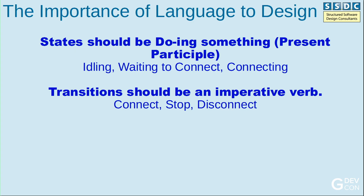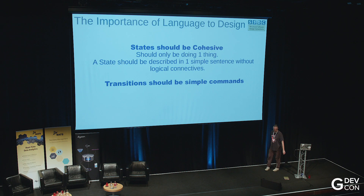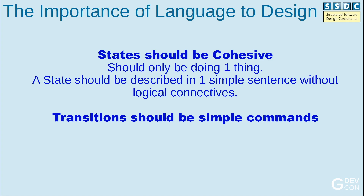Transitions should be imperatives - commands, essentially. 'Connect,' 'stop,' 'disconnect.' States should be cohesive - the same as modules should be cohesive, states should be doing one thing. It should be described in one simple sentence without logical connectives. If you've got an 'or' or an 'and' in your sentence describing the state, well, it should be two or three states. Transitions should be simple commands.